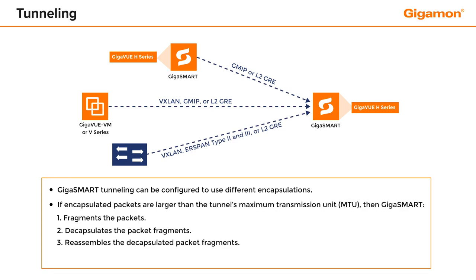If the configured outbound tunnel maximum transmission unit, MTU, is smaller than the encapsulated packet, then GigaSmart fragments the packet to fit within the tunnel's MTU.